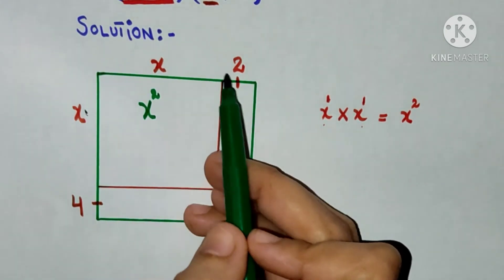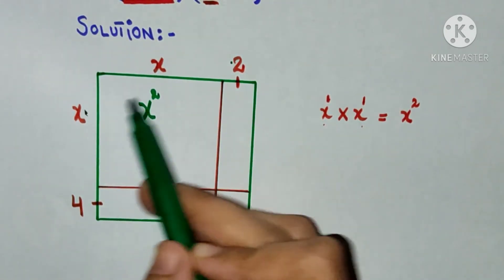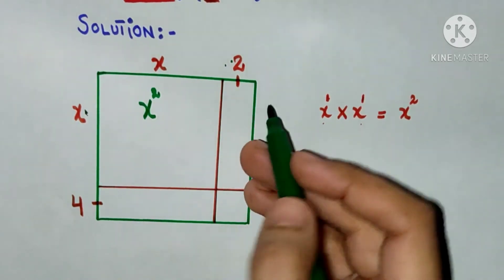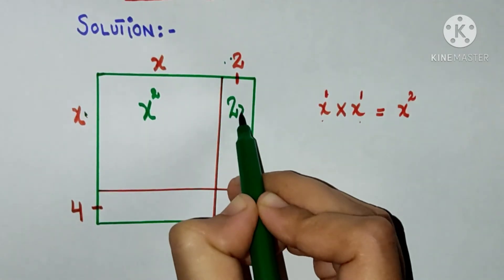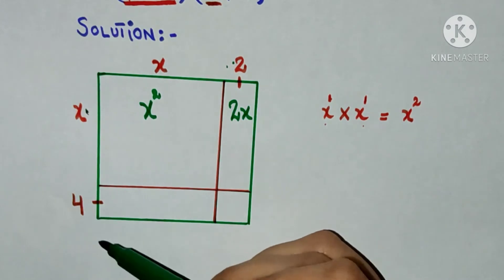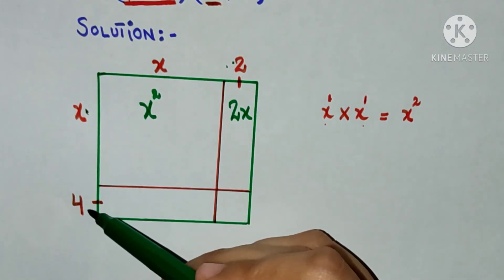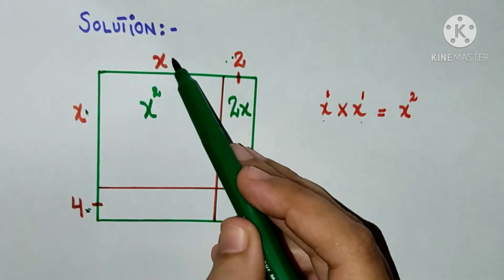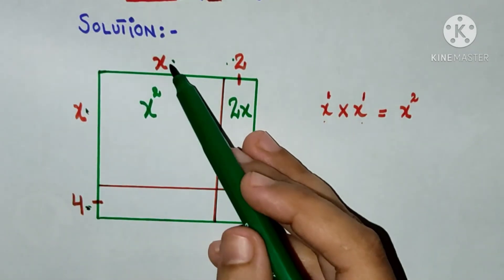Now again I will multiply this x by 2. x multiplied by 2, that will be 2x. Now here I have 4. I will multiply this 4 by this x, 4 multiply by x, 4x.